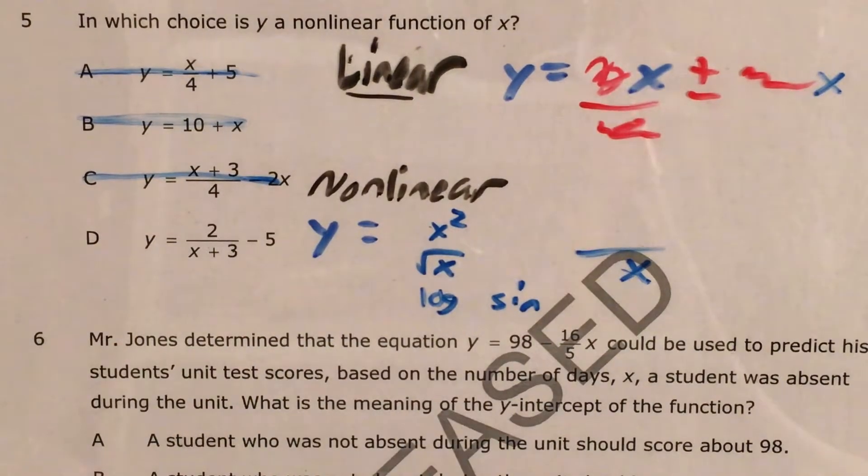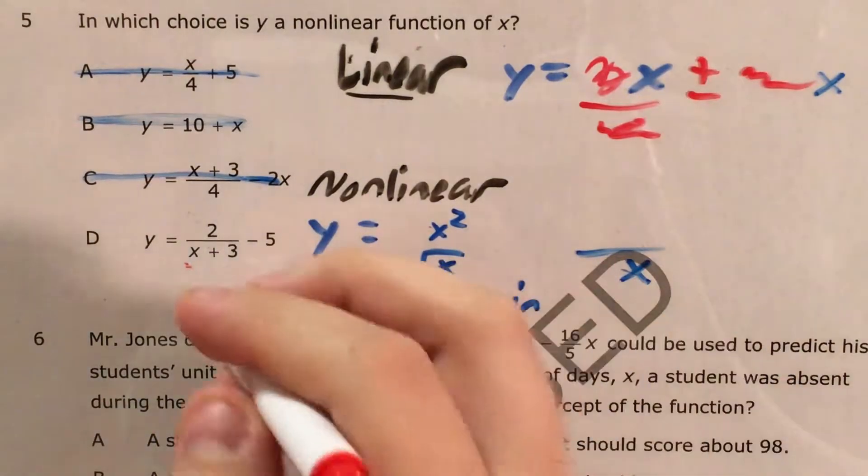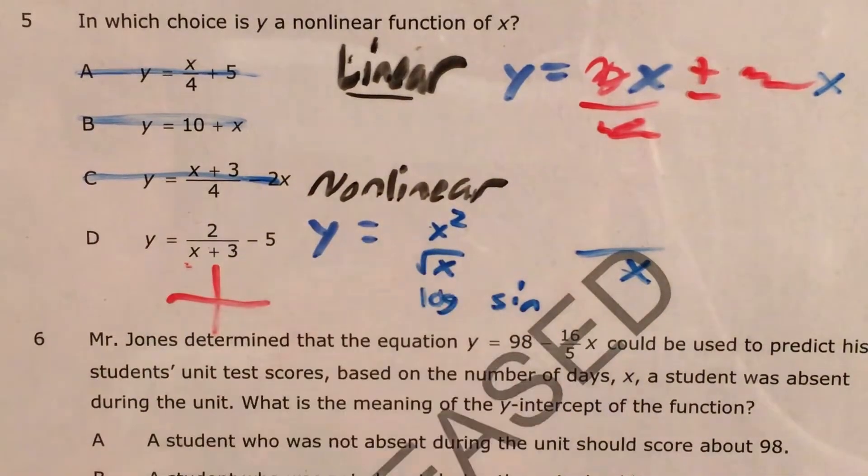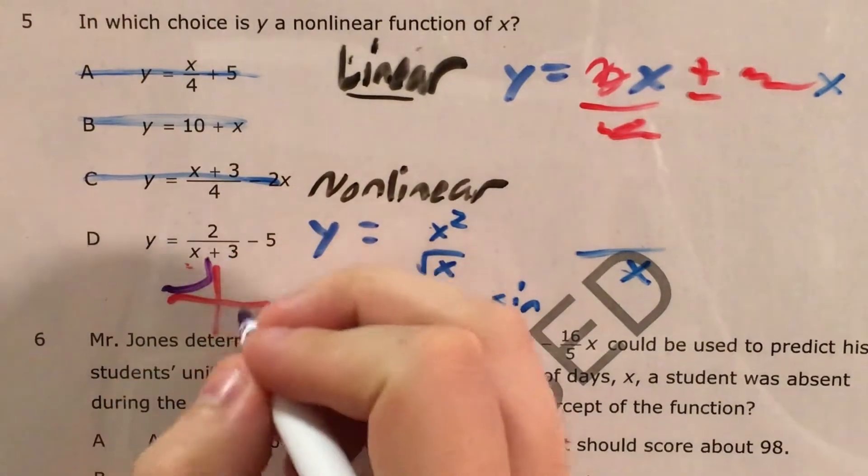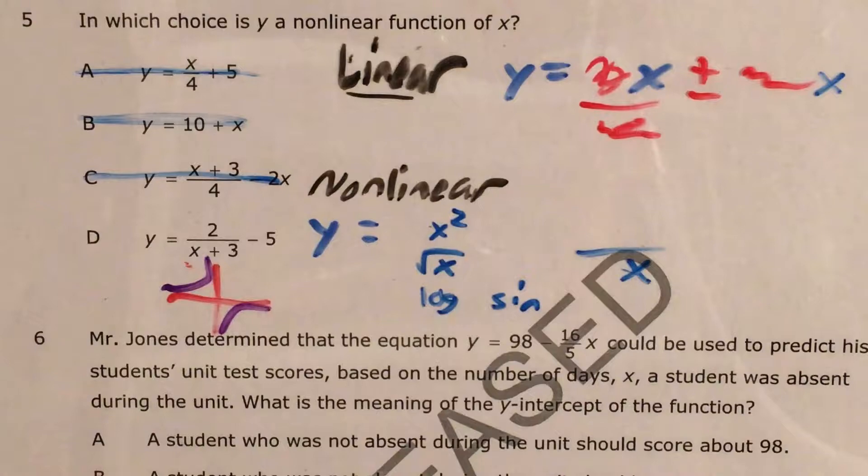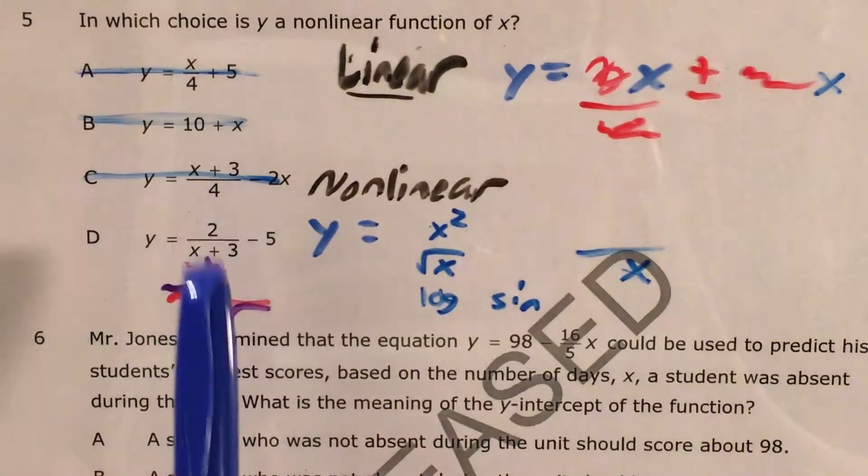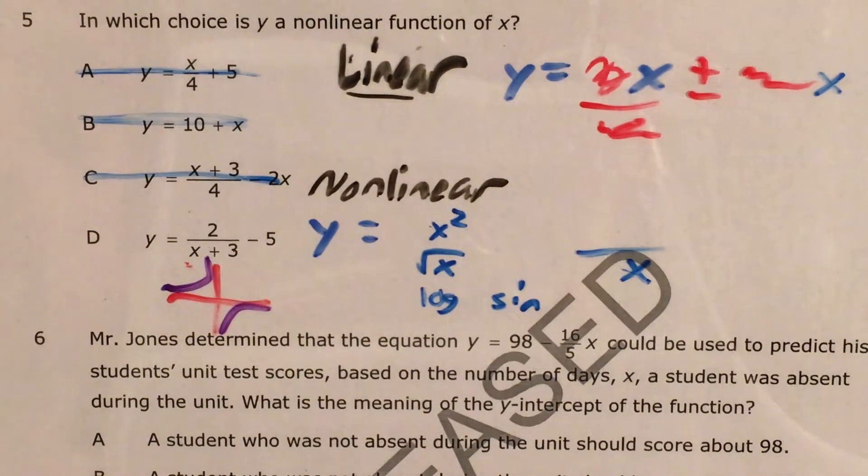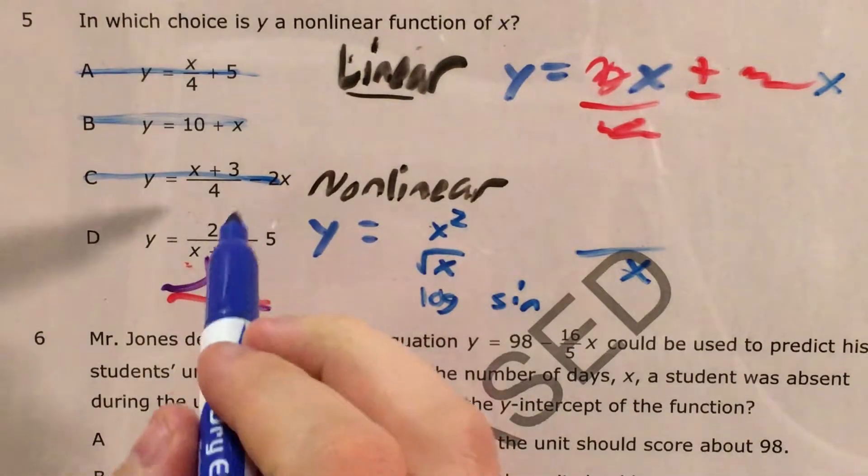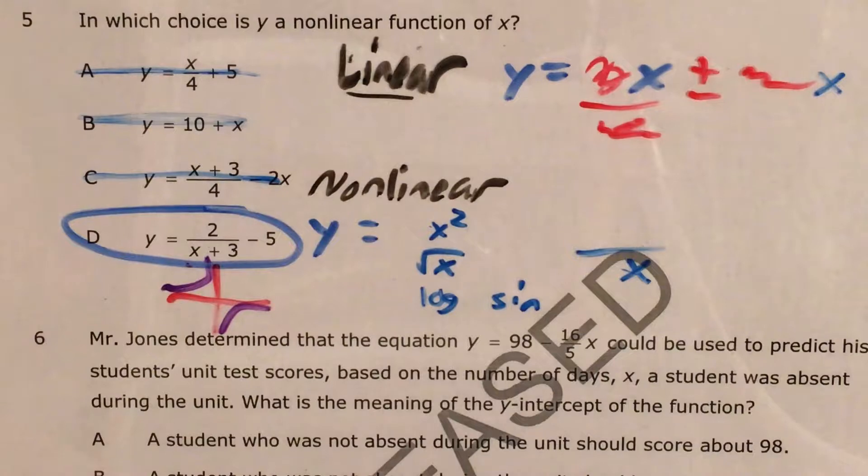And just to make sure, it looks like we have a variable on the bottom of a fraction. And any of these graphs will end up looking something like, if those are our axes, looking something like this. Two weird curves in one graph that somehow make up one function and somehow it jumps from all the way up here to all the way down there. They're really weird. But either way, choice D is our only remaining answer of a nonlinear function.